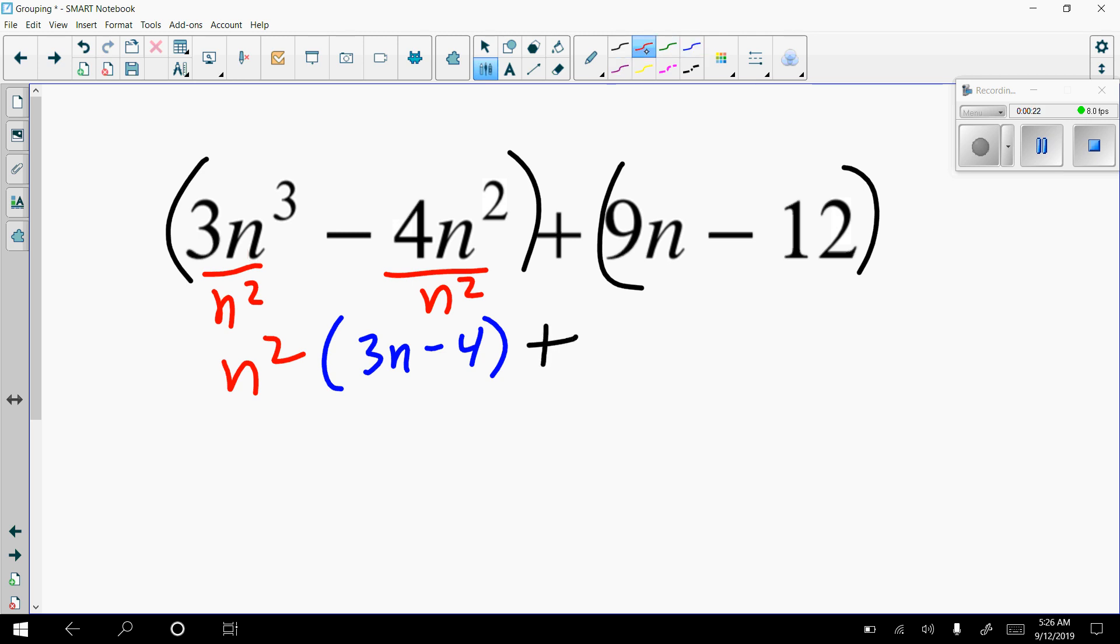And the second set looks like it has a GCF of 3, so that comes out to the front. And I'm going to be left with 3n minus 4.